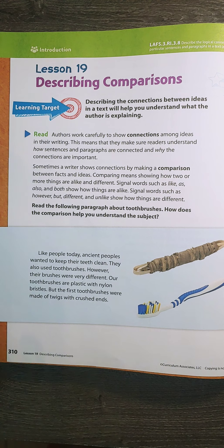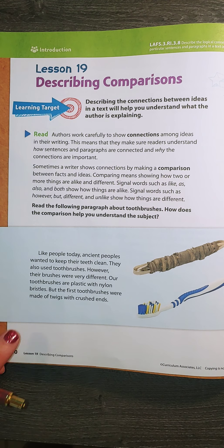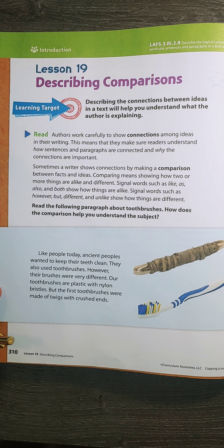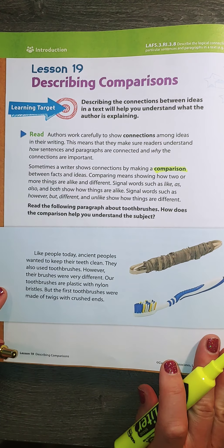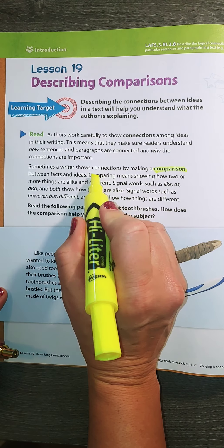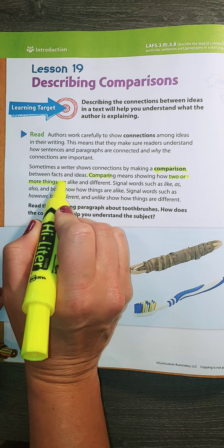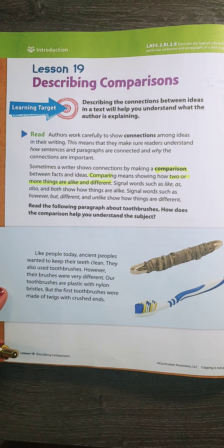We're going to look through comparisons — comparing and contrasting — and those signal words to help us as we go forward. What we're talking about is the same thing we've been working on: connections in the writing. How are paragraphs and sentences connected? What is the author trying to do? One of the ways is by making what we call a comparison. Comparing means how two or more things are alike or different. So we compare and contrast.